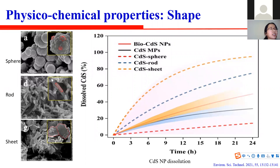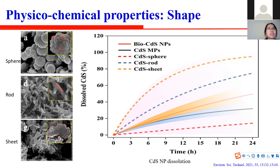Nanoparticle shape is also an important consideration. This TEM image allows us to see different shapes of copper sulfide in the environment — sphere, rod, and sheet. Different shapes have different chemical reactivity, such as dissolution. Spherical nanoparticles have the lowest dissolution rate, as indicated by the red dashed line. In contrast, the copper sulfide sheet has the greatest dissolution, as suggested by the orange dashed line.